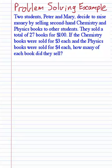Let's do a problem-solving example of a linear equation. Let's read it together. Two students, Peter and Mary, decide to raise money by selling second-hand chemistry and physics books to other students. They sold a total of 27 books for $100. If the chemistry books were sold for $3 each and the physics books were sold for $4 each, how many of each book did they sell?